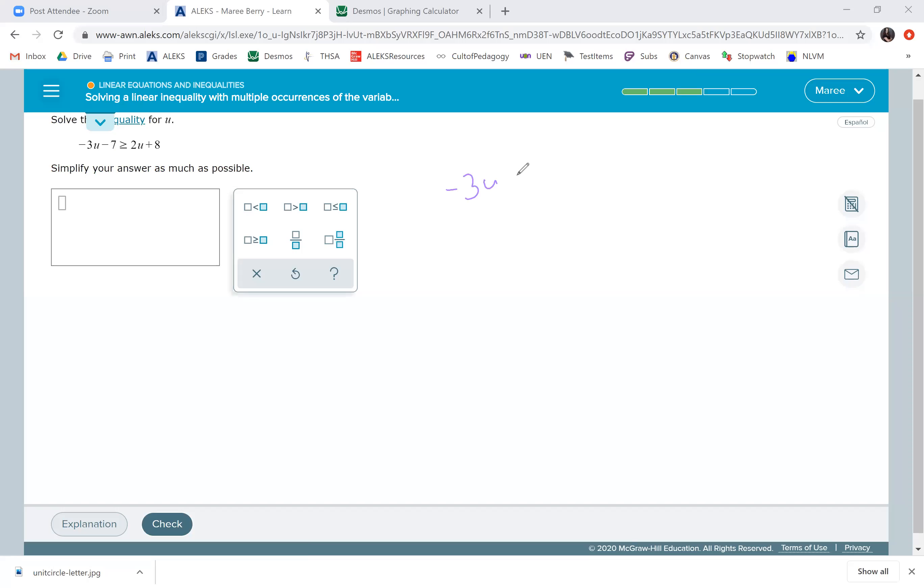So we have negative 3U minus 7 greater than or equal to 2U plus 8. Now really, I do not want to subtract 2U because then I'll get negatives. I'm going to add 3U here, which means I need to subtract 8 here. So 8 and 7 is... wait, 7 and 7 is 14 plus 1. So negative 15 is greater than or equal to 5U. Divide by 5 and you have negative 3. So negative 3 is greater than, and I divided by a positive so I didn't have to switch the sign, is greater than or equal to U.